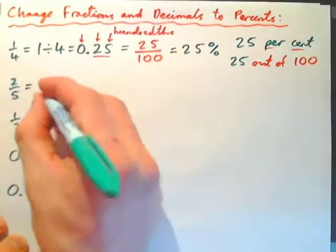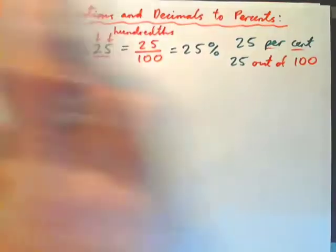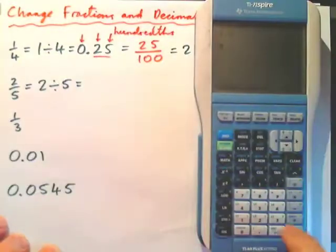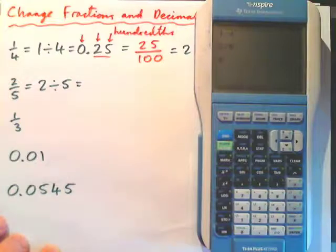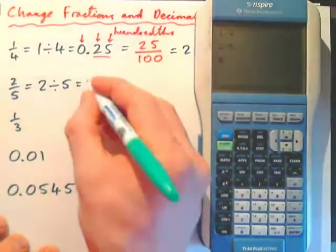Two-fifths is two divided by five, of course. Put that in your calculator. Two divided by five. Point four, which is the same thing as zero point four.